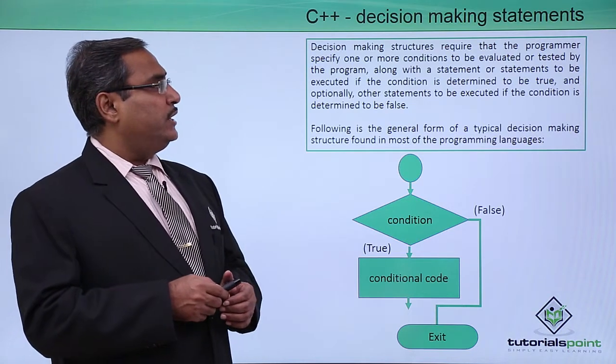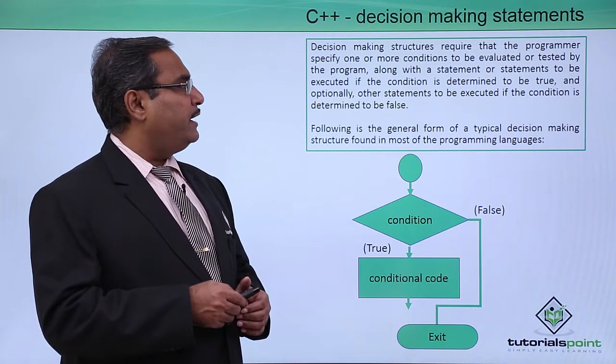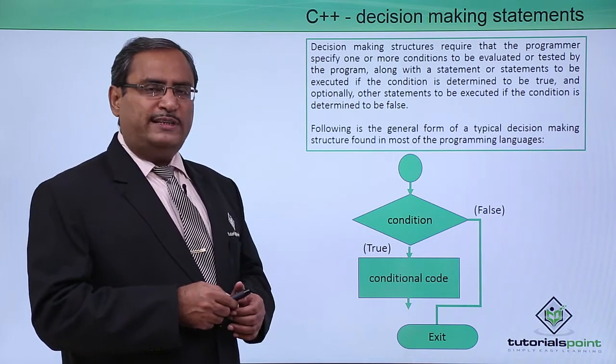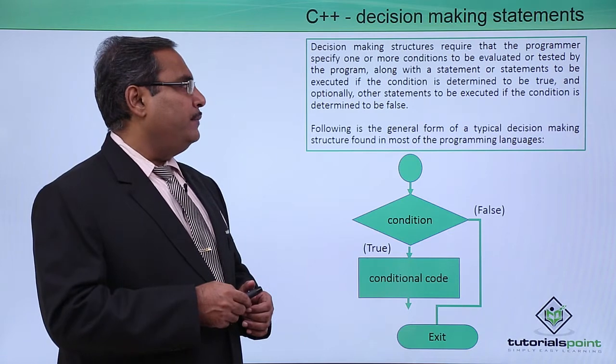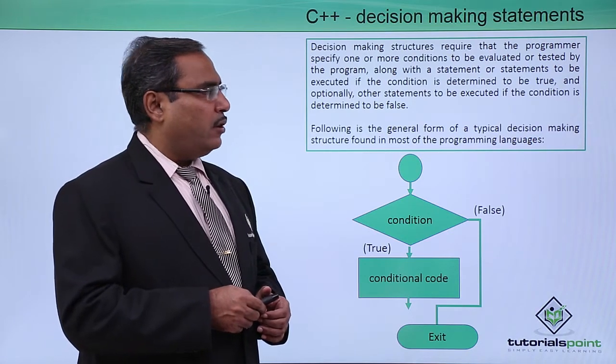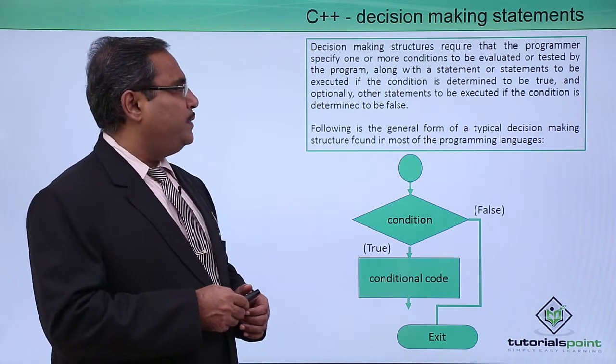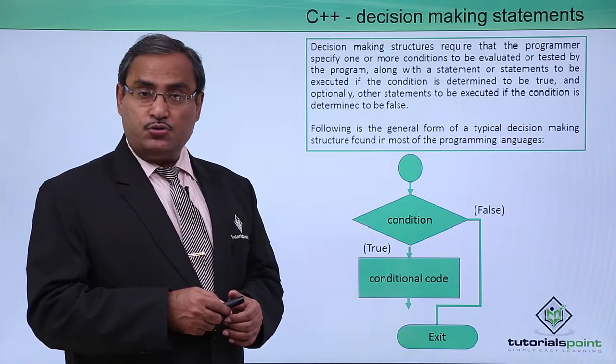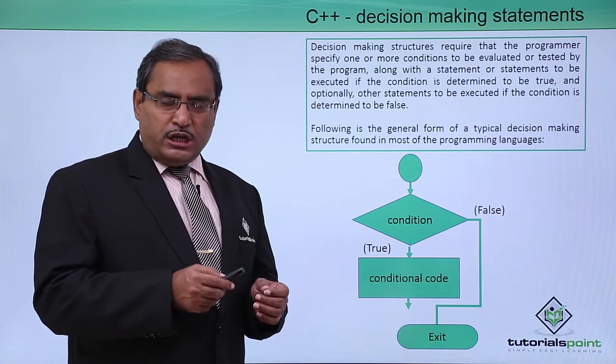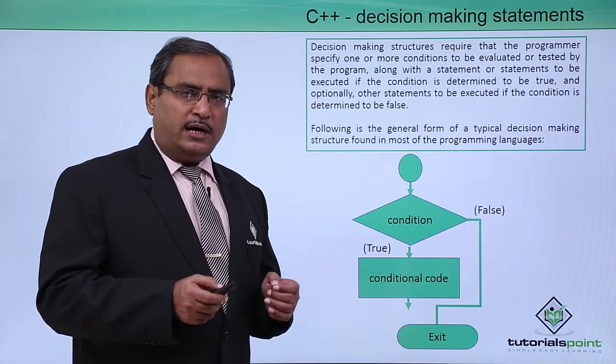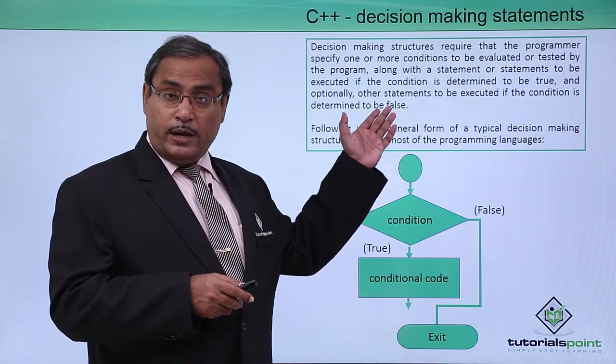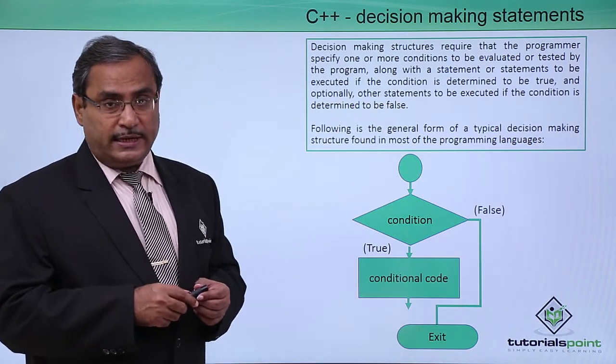Decision making structures require that the programmer specify one or more conditions to be evaluated or tested by the program, along with a statement or series of statements to be executed if the condition is determined as true. Optionally, if the condition is false, we can execute a statement or bunch of statements as required.